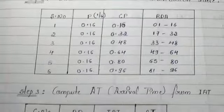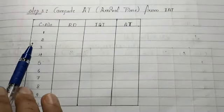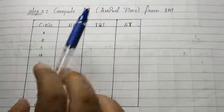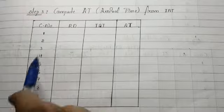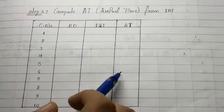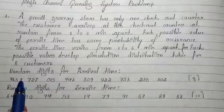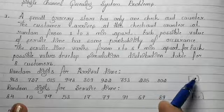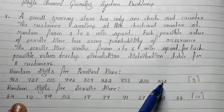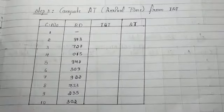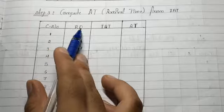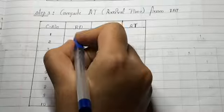The third step is to compute arrival time from inter-arrival time. We need four columns: customer number, random digits, inter-arrival time, and arrival time. Random digits for arrival time are given in the question — there are nine values, so we copy them into the table. We are considering customer numbers up to ten. The first value of the random digit is always 0 for arrival time.